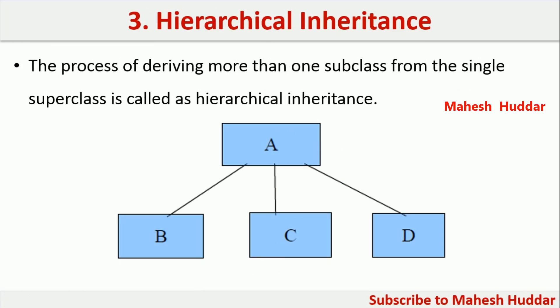In hierarchical inheritance, the properties of one class can be inherited by multiple classes. That is, the properties of A are inherited in B, as well as C, as well as D.